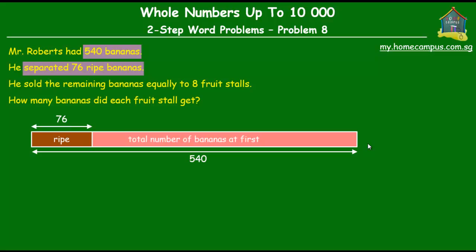Now after separating out the 76 ripe bananas, the bananas that he had left, what he did was he sold those bananas. And he sold those bananas equally to 8 fruit stalls. So this light pink unit over here, which actually is the remaining bananas, is also the number of bananas that he sold. And what he did was he sold them equally to 8 fruit stalls. So all these bananas, the light pink ones, they were divided equally and sold to 8 fruit stalls.